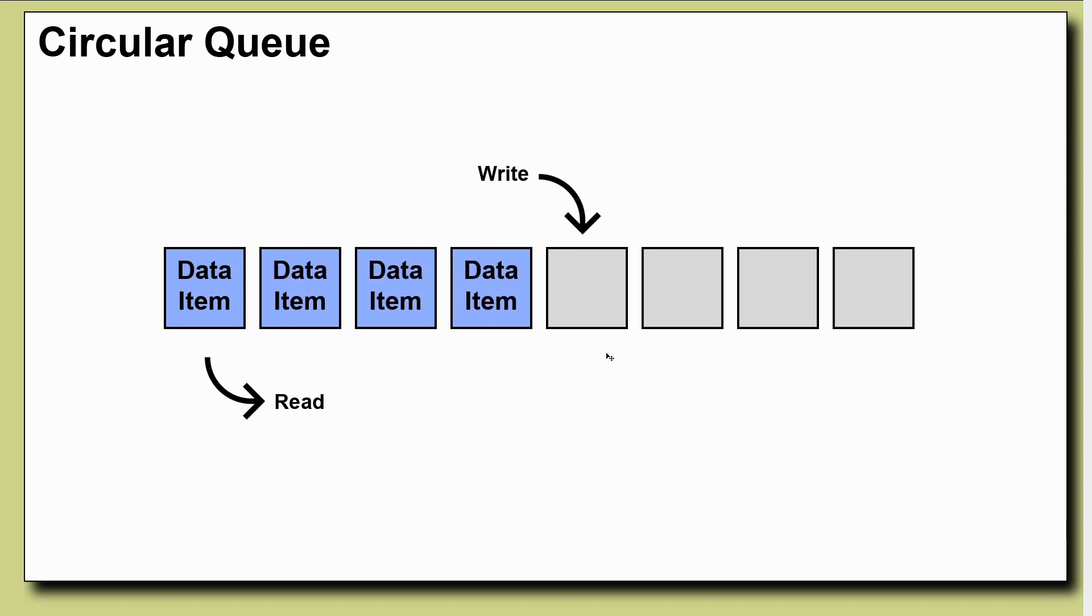The write location is pointing to the next place where a data item is going to go and the read location is pointing to the next place we're going to read from. So then if we perform a dequeue operation we take the data item and then the read pointer moves forward.